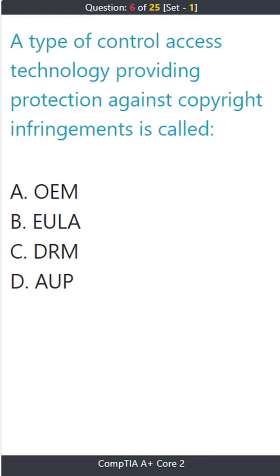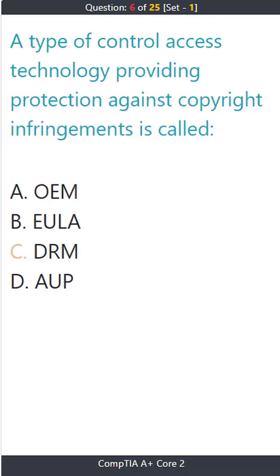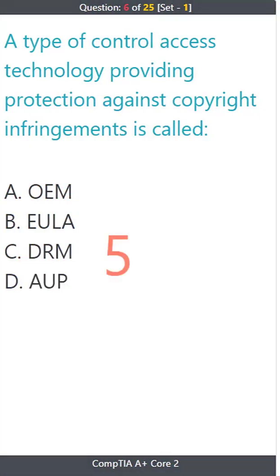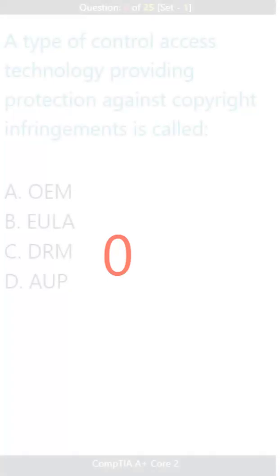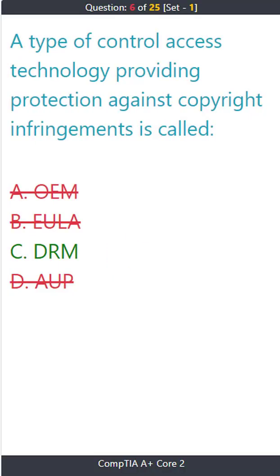Question 6: A type of access control technology providing protection against copyright infringements is called: A) OEM. B) EULA. C) DRM. D) AUP. The correct answer is C: DRM.